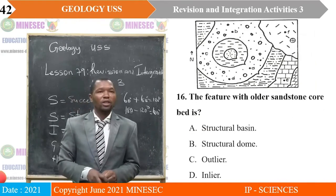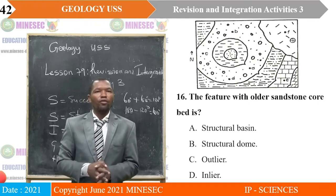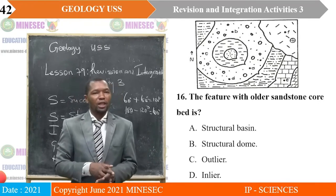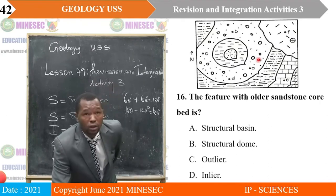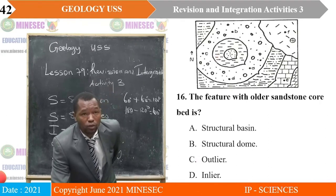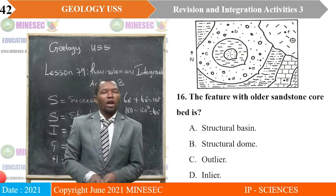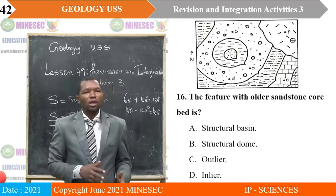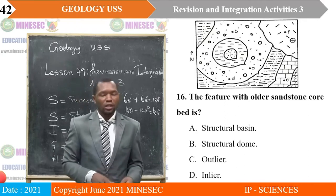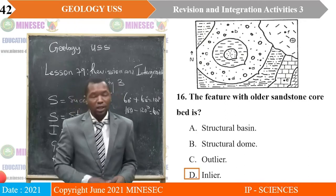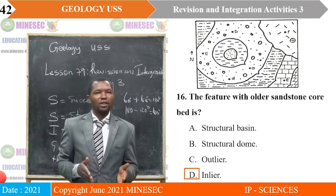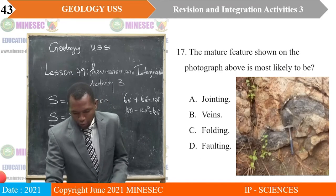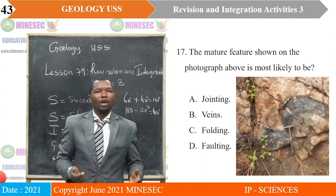Question 16: The feature with an older sandstone core bed is — A — structural basin; B — structural dome; C — outlier; D — inlier. The correct answer is D, inlier. Inliers have the old bed at their core, completely surrounded by younger beds.